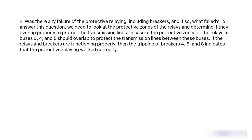Question 2: Was there any failure of the protective relaying, including breakers, and if so, what failed? To answer this question, we need to look at the protective zones of the relays and determine if they overlap properly to protect the transmission lines. In this case, the protective zones of the relays at buses 3, 4, and 5 should overlap to protect the transmission lines between these buses. If the relays and breakers are functioning properly, then the tripping of breakers 4, 5, and 8 indicates that the protective relaying worked correctly.